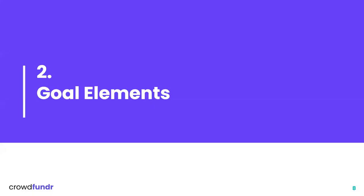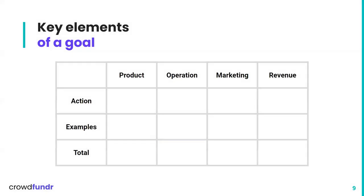What are the elements of a goal? This is the bread and butter of this presentation. We're going to go over all four elements: product, operation, marketing, and revenue. For every one of these elements, there will be an action for you to perform to determine what your goal should be. I'll give you an example, and at the end we will have a goal for our little fake project.